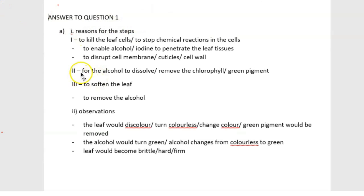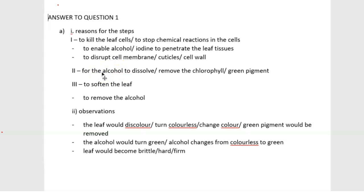For step II, the boiled leaf was placed in the test tube containing alcohol. So why did we place the boiled leaf in alcohol? It was done for the alcohol to dissolve or to remove the chlorophyll or green pigment from the leaf. The leaf contains the green pigment called chlorophyll, which is organic, so we needed an organic solvent to remove it. That is why we used alcohol — because water is inorganic and doesn't dissolve organic substances like chlorophyll.